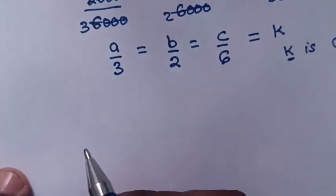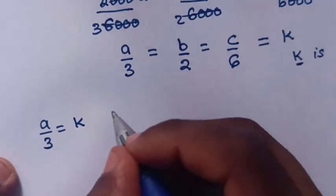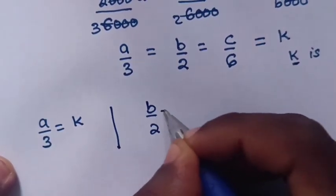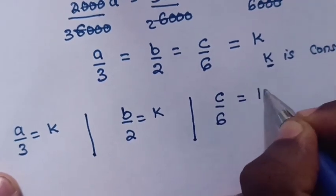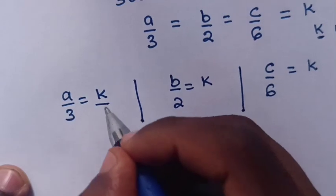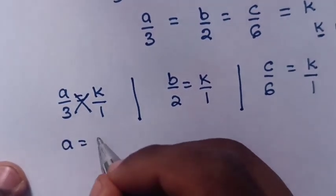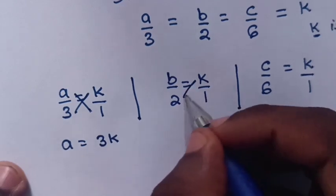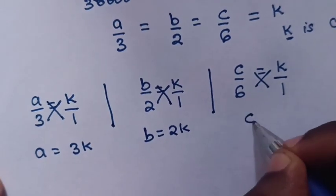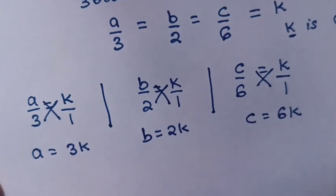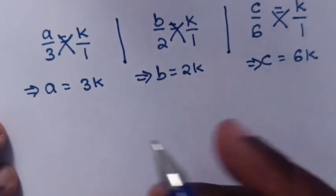Since K is constant: A/3 equals K, B/2 equals K, and C/6 equals K. Cross-multiplying gives A equals 3K, B equals 2K, and C equals 6K. We now have the values of A, B, and C in terms of K.